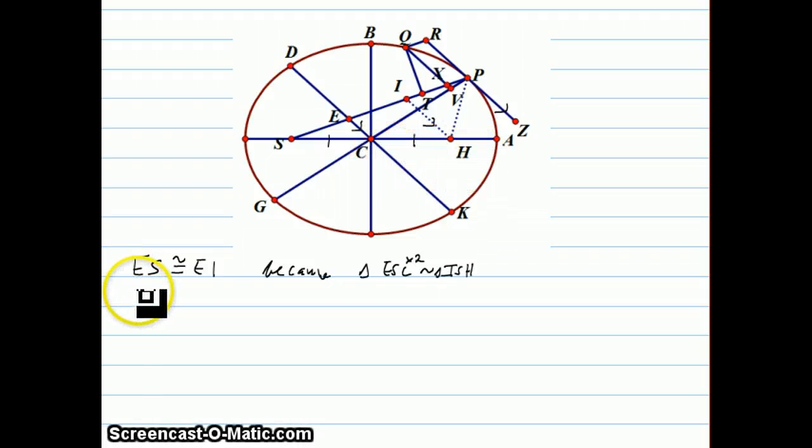Here's the way that he does it. He starts by saying that PS and PI together—well, PS is the same thing as ES plus EP. So PS plus PI is the same thing as ES plus EP plus PI. But he's already proved that ES and EI are equal.